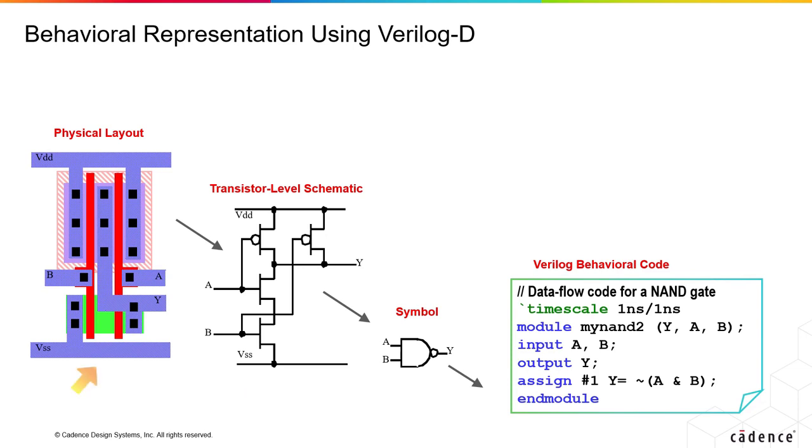The same MOS transistors can be represented in a layout with these metal layers connected as shown here, with all the PIN and supply information. This is the symbol view of a NAND gate that can be used for instantiating and simulating it.